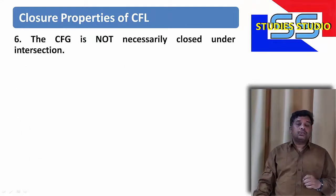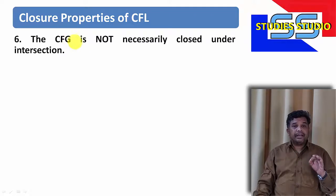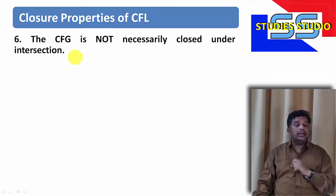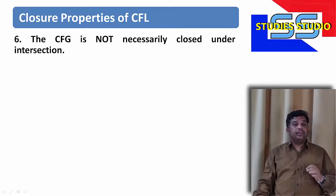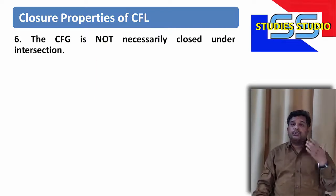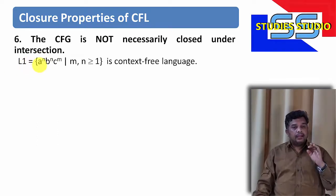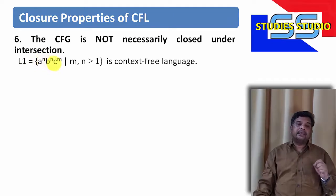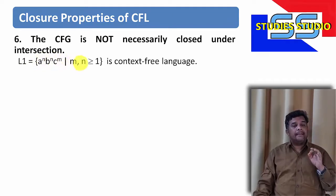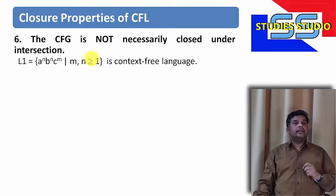The sixth Closure Property is: Context-Free Grammar is not necessarily closed under intersection. It is a very important Closure Property. We are going to show this with the help of an example. Let us take a language containing strings in the form of a to the power n, b to the power n, and c to the power m, where m and n are both greater than or equal to 1.